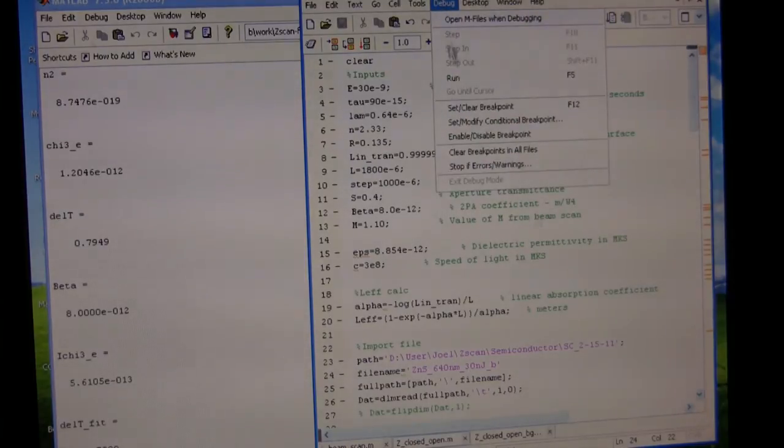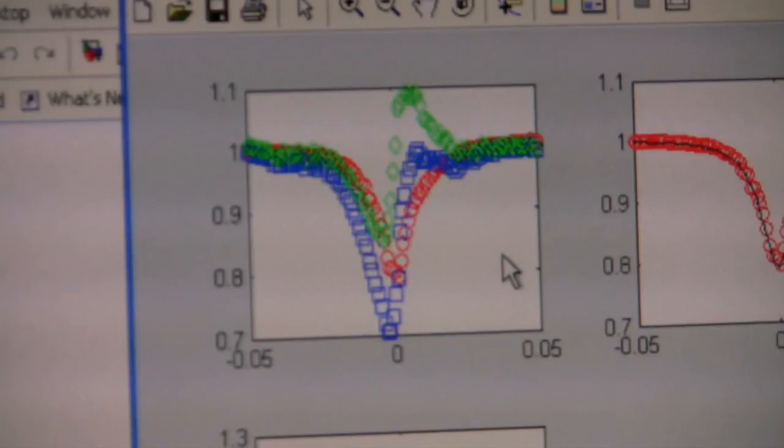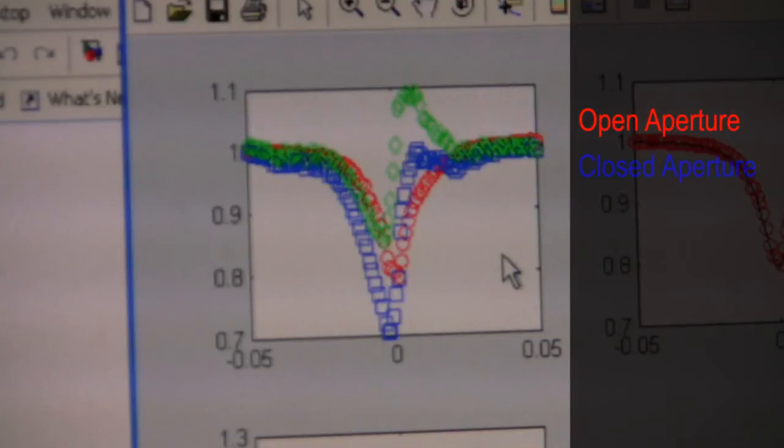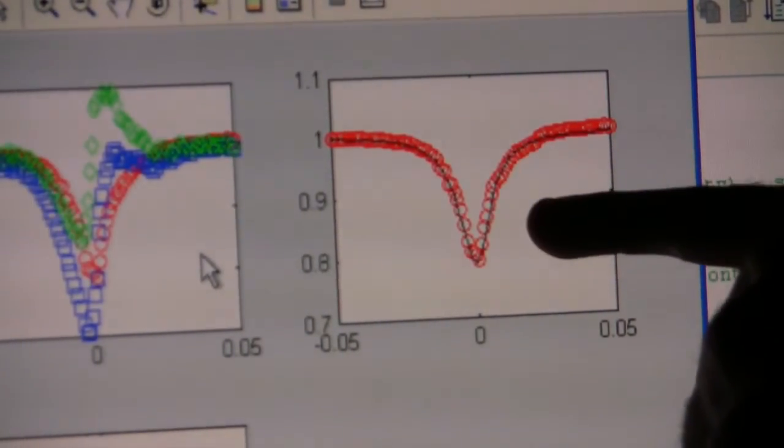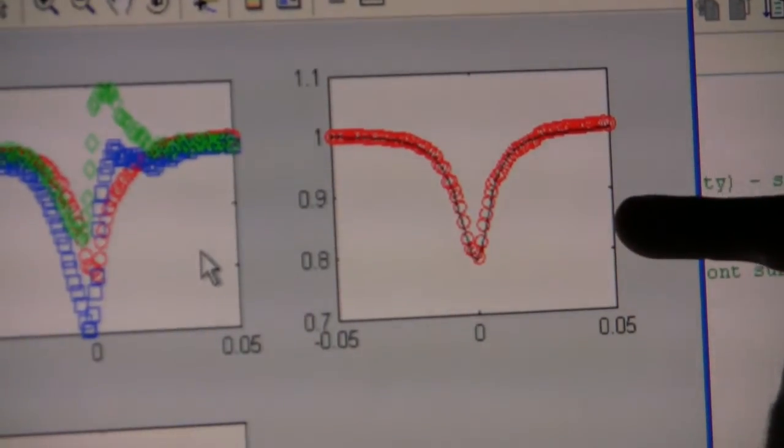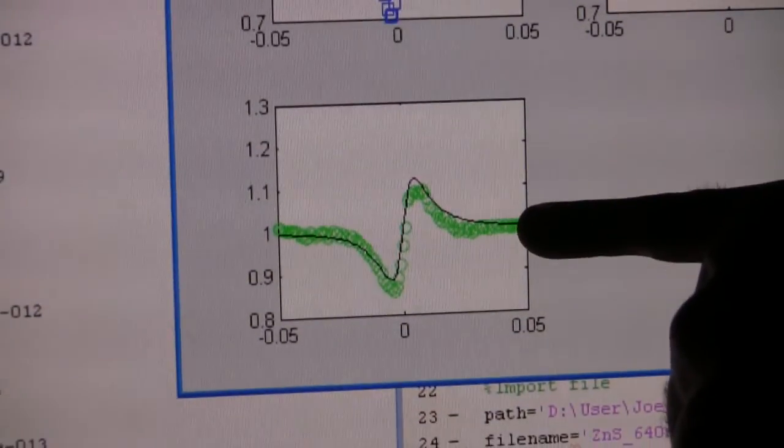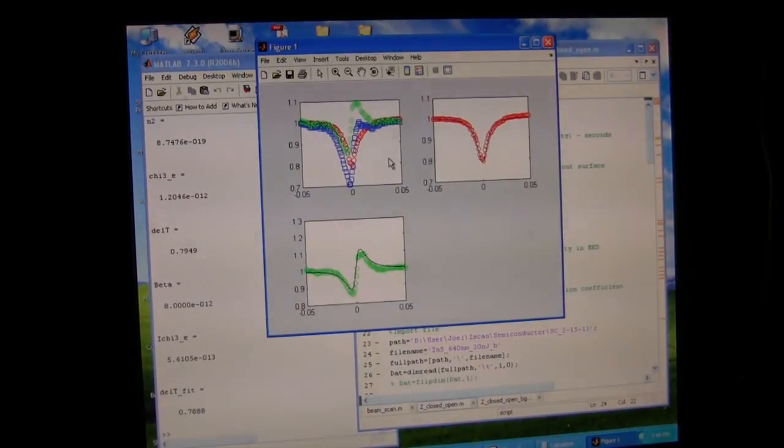And then we can go ahead and run this program. And what you can see here in the upper left-hand corner are those three curves that you saw when we were actually running the experiment. Again, the red curve here is the open aperture. The blue curve is the closed aperture. And the green is the division of the two. And so what I'm showing over here is our ability to fit that open aperture data. By fitting it, we can extract out the two-photon absorption coefficient. By doing the same thing to this divided scan, we can get the nonlinear refractive index. And that's how we characterize our particular material.